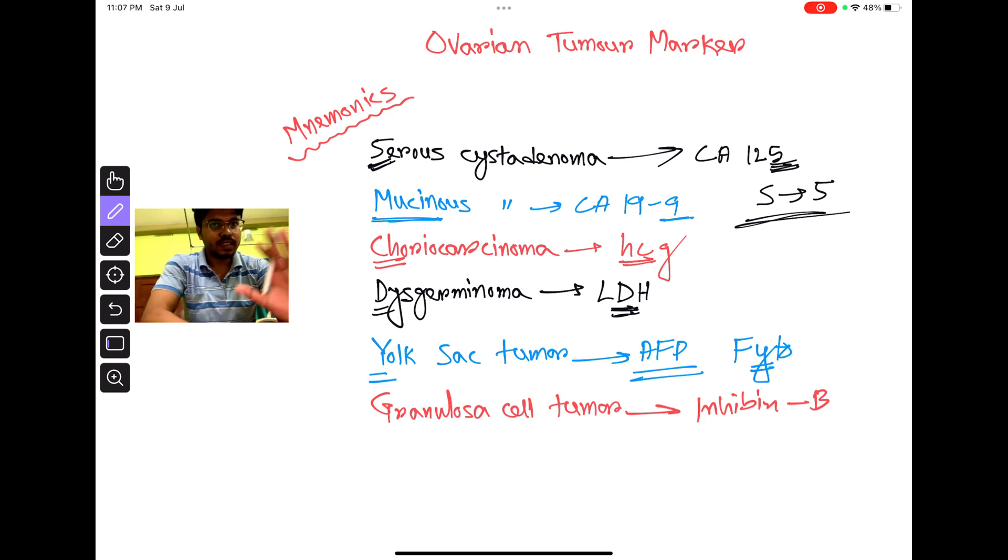Quick recap: serous cystadenocarcinoma, S looks like 5, CA 125. Mucinous cystadenocarcinoma, mucin 9, CA 19-9. Choriocarcinoma, HCG, CH-CH.